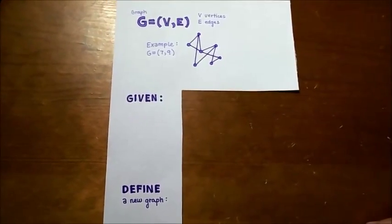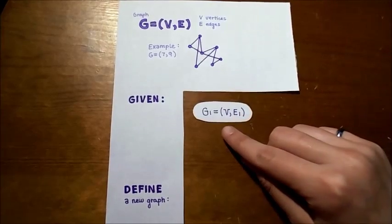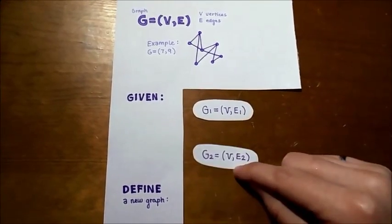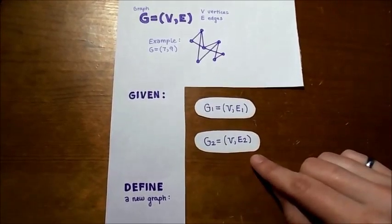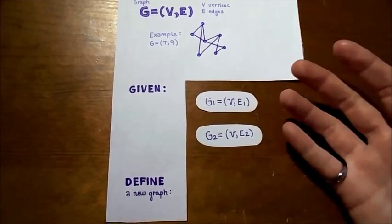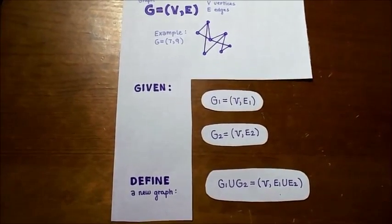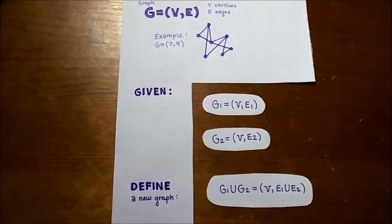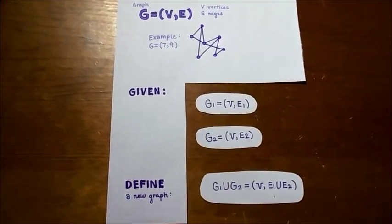Now let's say that we're given two such graphs. We'll let G1 be a graph with V vertices and E1 edges, and we'll let G2 be a graph with the same number of vertices but maybe a different number of edges. We can use these two graphs to construct a new graph, namely G1 union G2. This graph has V vertices and the union of the two graphs for edges. Let's look at a quick example.